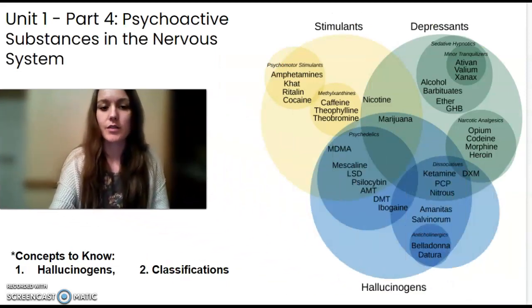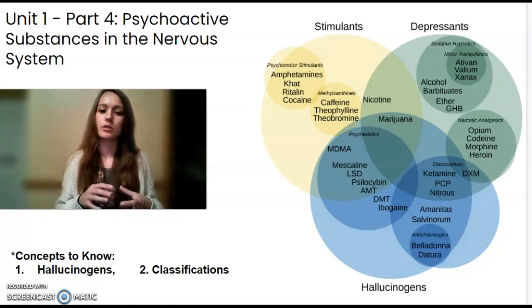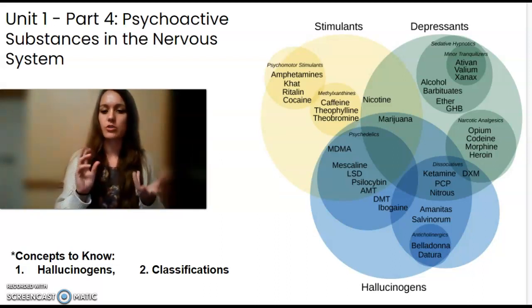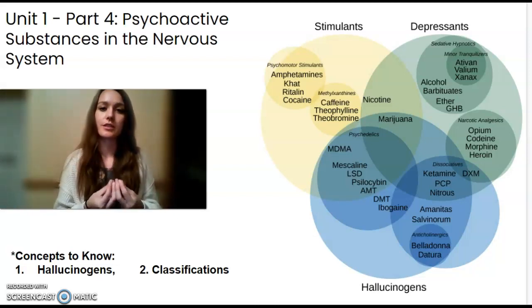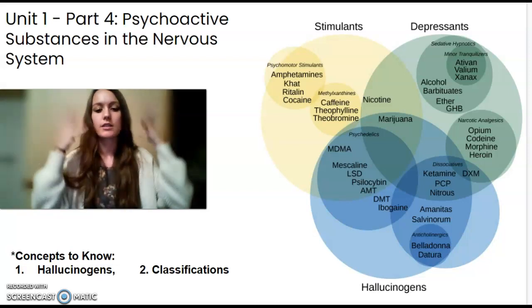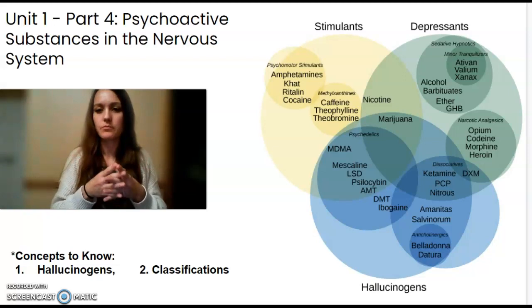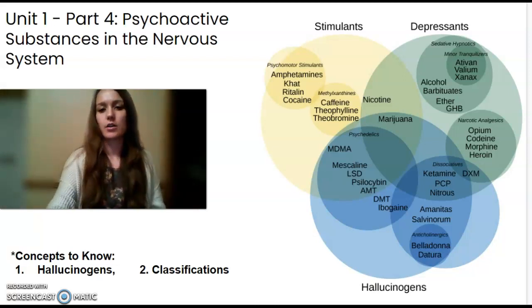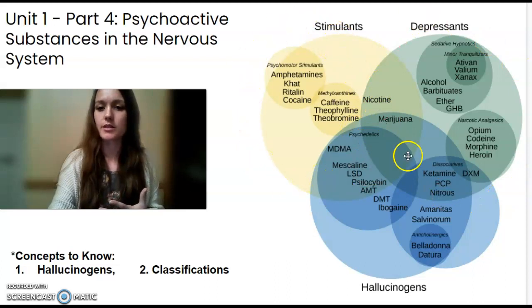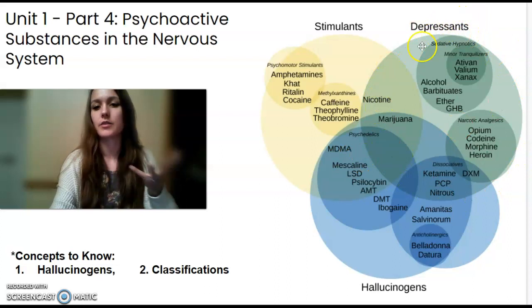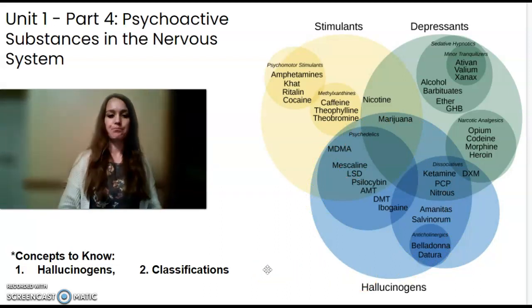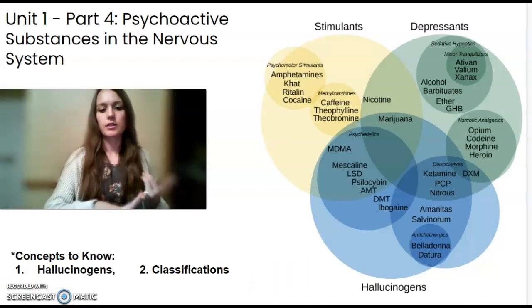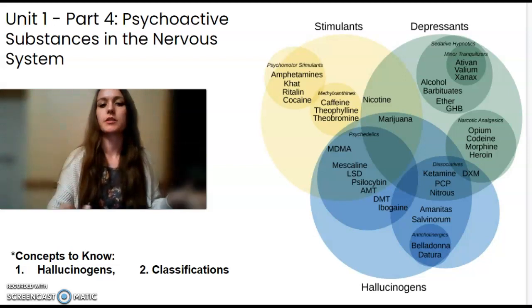Another classification is a hallucinogen — a substance that creates an altered perception. It might change someone's thought processes, create delusional thoughts, produce false sensations of touch, sight, or sound, and alter reality. They are sometimes called psychedelic substances. In this overlapping chart, you can see substances classified by whether their effects arouse, subdue, or create an altered perception. Hallucinogen, stimulant, and depressant are all classifications based on the substance's effect on the body.